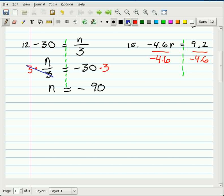And as you know, the 4.6's are going to cancel out to 1. Which leaves us with 1 times r, which is r. And 9.2 divided by -4.6 is going to end up being a negative. And that value is 2. So r equals -2.